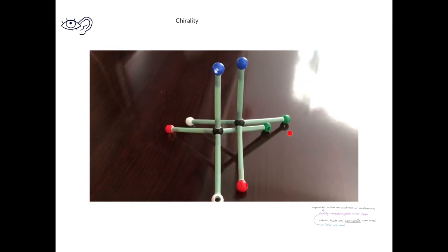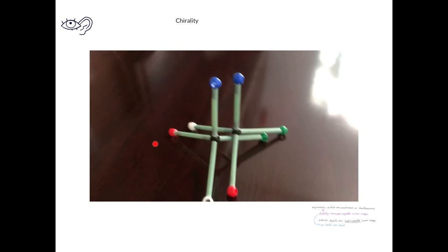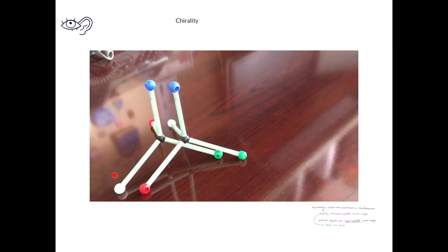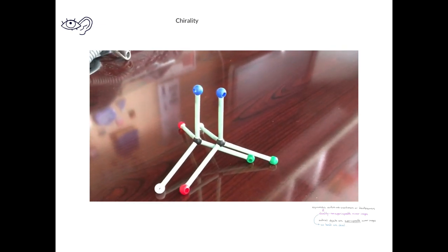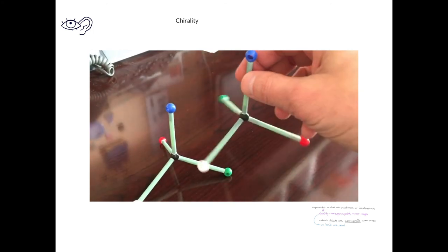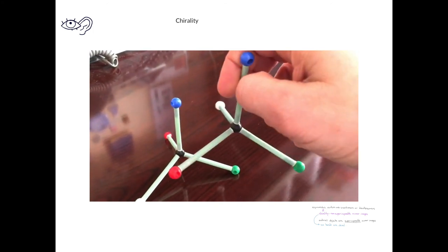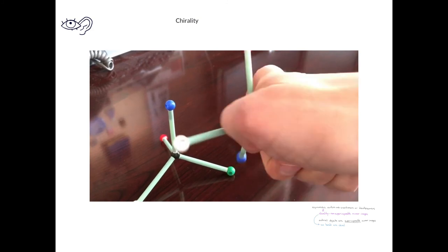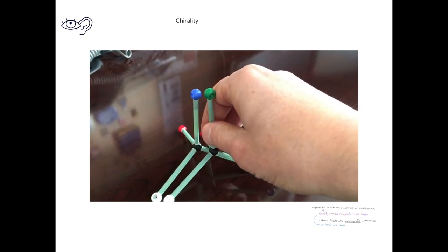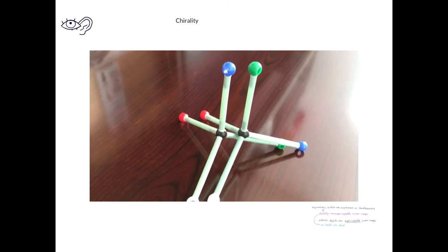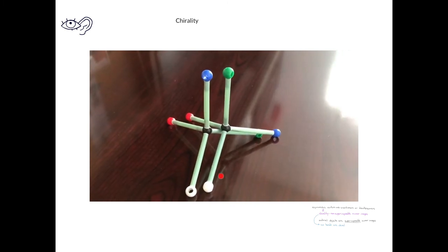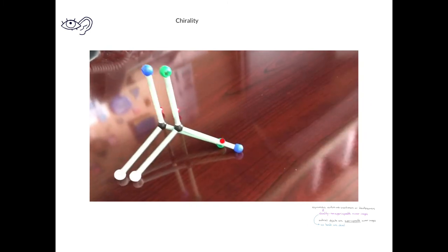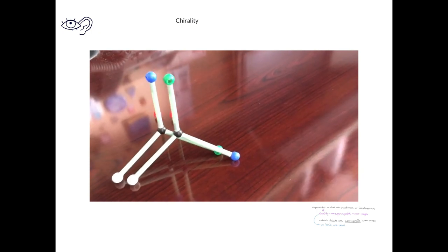Now we see that the green atoms are aligned and the blue atoms are aligned, but the red and white atoms are no longer aligned. Maybe if we turned it a different way, we could get everything to line up. Now we see the red atoms and the white atoms are aligned, but the blue and the green atoms are no longer aligned. This means that these molecules are enantiomers, or non-superimposable mirror images.